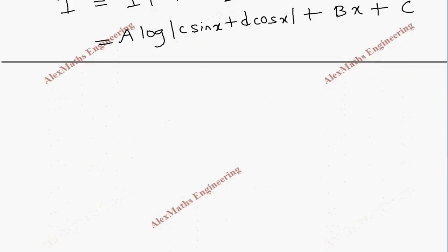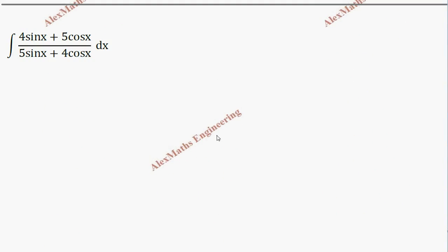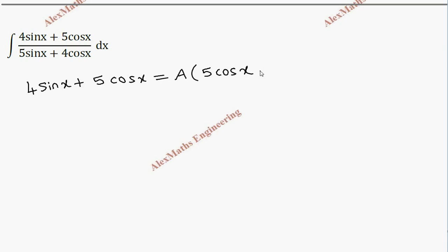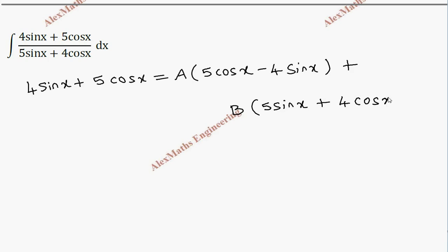Now let's solve a problem based on this. The question is: integral of (4 sinx + 5 cosx) / (5 sinx + 4 cosx) dx. We take the numerator 4 sinx + 5 cosx equal to A times the differentiation of the denominator, which is 5 cosx − 4 sinx, plus B times the denominator, which is 5 sinx + 4 cosx.